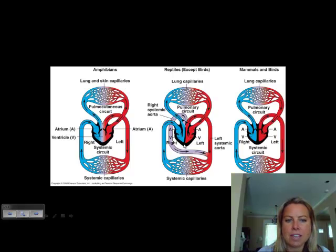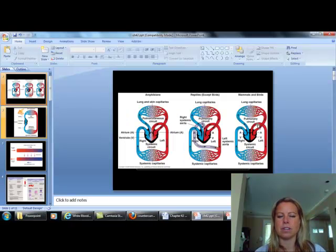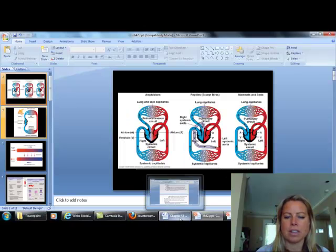Then you can see reptiles have a partial wall, but the wall doesn't go all the way up to the top, so there's still a little bit of mixing. And then when you get over to mammals and birds, we have the best heart that's the most efficient because we have oxygen-rich and oxygen-poor blood staying separate from one another within the heart. So that's something that we talked about really briefly when we are going into that.